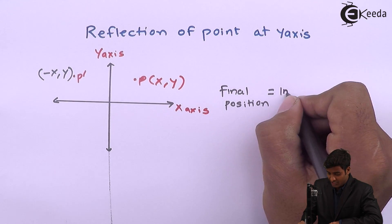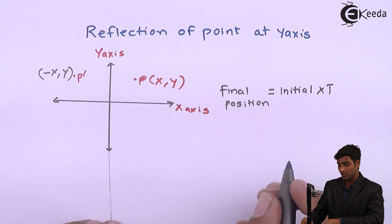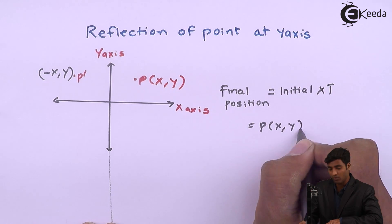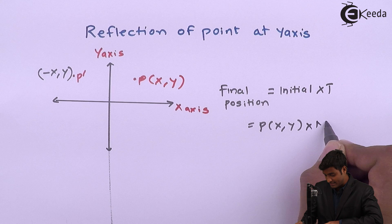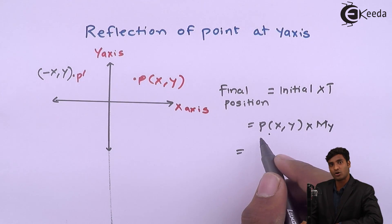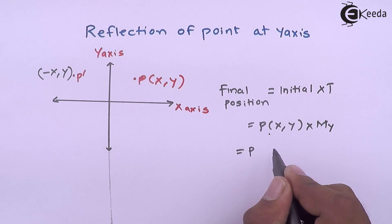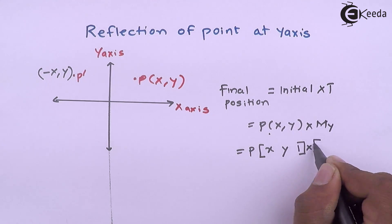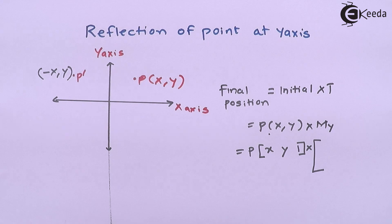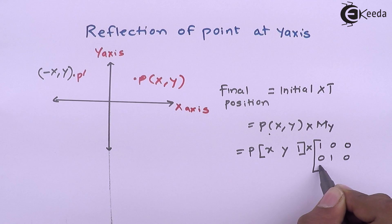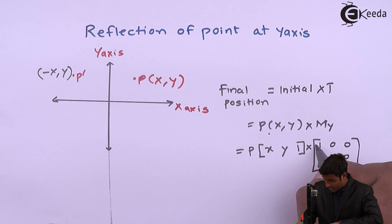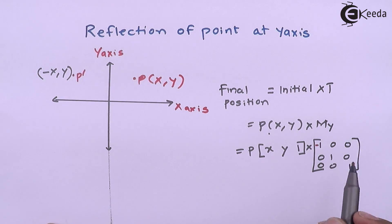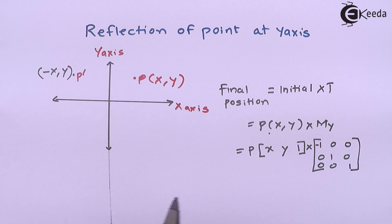We know that the final position equals the initial position multiplied by the transformation matrix. Here the initial position is P(x, y) and the transformation is a mirror about the y-axis. I will convert this coordinate into matrix form and write P as [x, y, 1]. The transformation matrix for mirror about the y-axis is the identity matrix, but the sign of the x-axis changes, so I place -1 at that position.